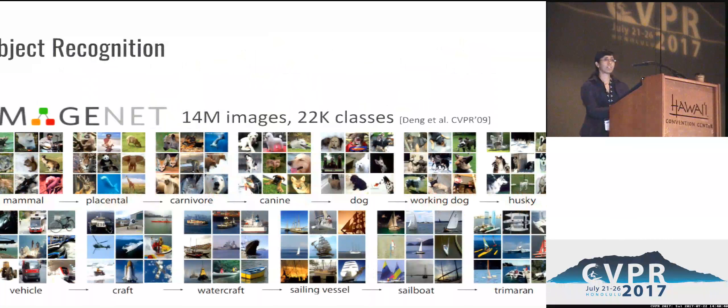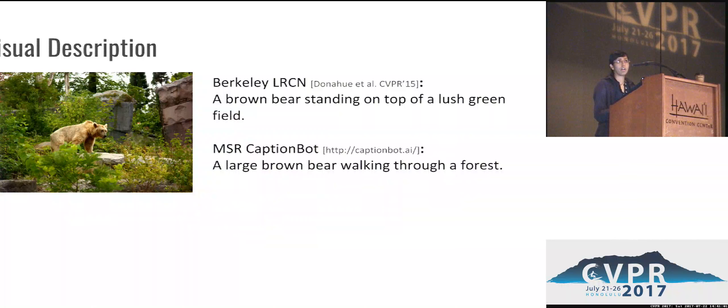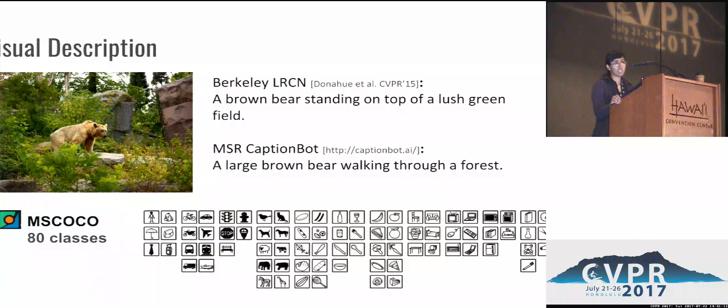Let's look at the state of visual recognition. Current visual recognition datasets have millions of images and several thousand categories of objects, and object recognition models can identify hundreds of categories of objects. On the other hand, if you look at visual description, image captioning models generate relevant and useful descriptions about images or objects in images, but they do so only for a far fewer number of categories, specifically only for those that are present in existing image caption datasets like the MS COCO dataset.